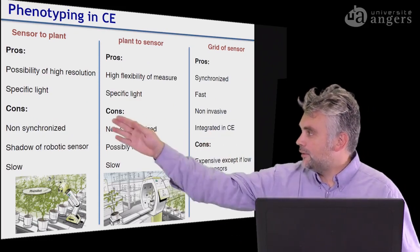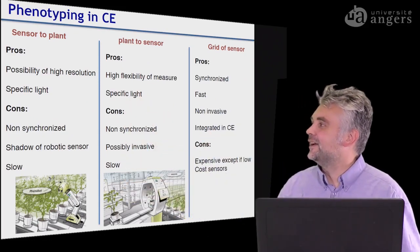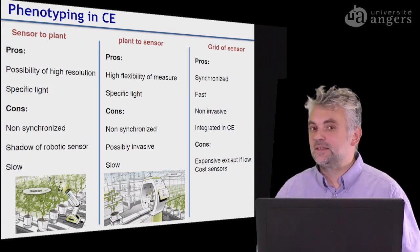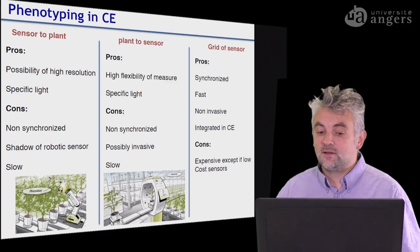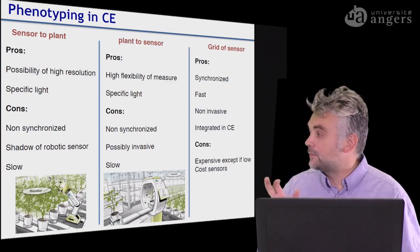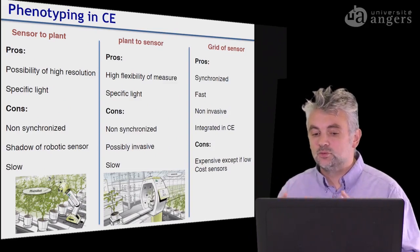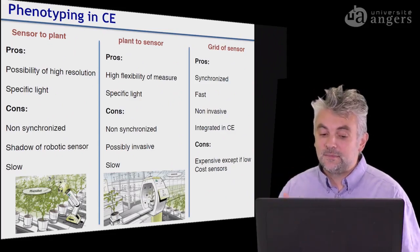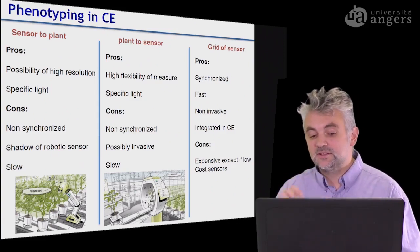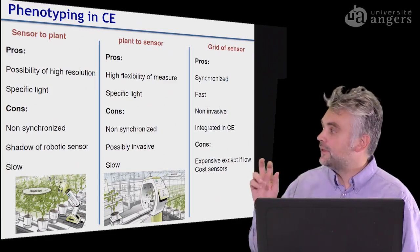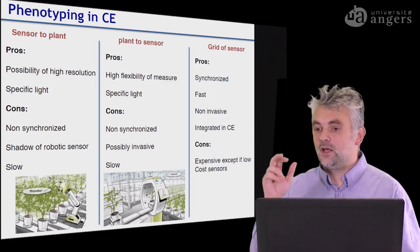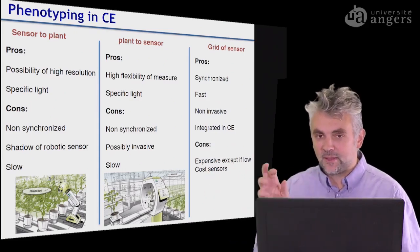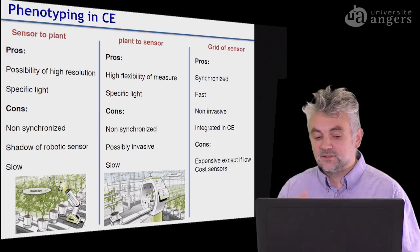The second approach is to bring the plant to the sensor. This is especially relevant when you have a very expensive sensor, and because you bring the plant to a special cabinet, you have high flexibility in how you want to do the measurement — you can choose a specific light to have specific contrast and so on. Some pitfalls: the measurement is again not synchronized. It's also possibly invasive, because it is well known that conveying the plant is not without causing stress to the plant. The life of the plant will not be the same if it stays in place or if it is conveyed — the mechanical constraint is not non-invasive.